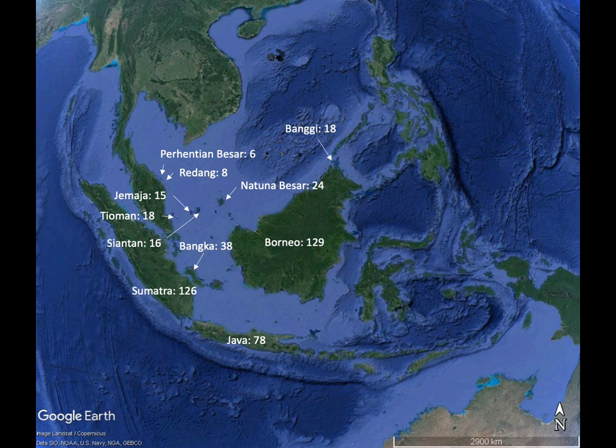This variation in species richness between oceanic islands is also seen in other taxa — other groups of species. For example, this image shows the richness of mammal species across several islands in Southeast Asia. Note how the number of mammal species ranges between 6 and nearly 130 across just some of these islands.